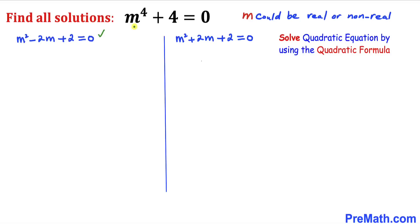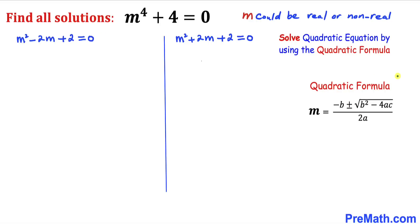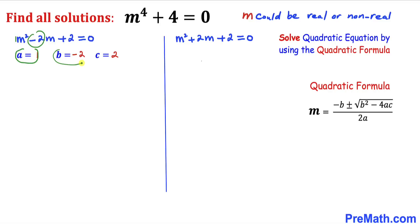Both of these are quadratic equations, and we are going to solve them using the quadratic formula. Let's focus on the first equation. Using the quadratic formula, in our case a = 1, b = -2, and c = 2.